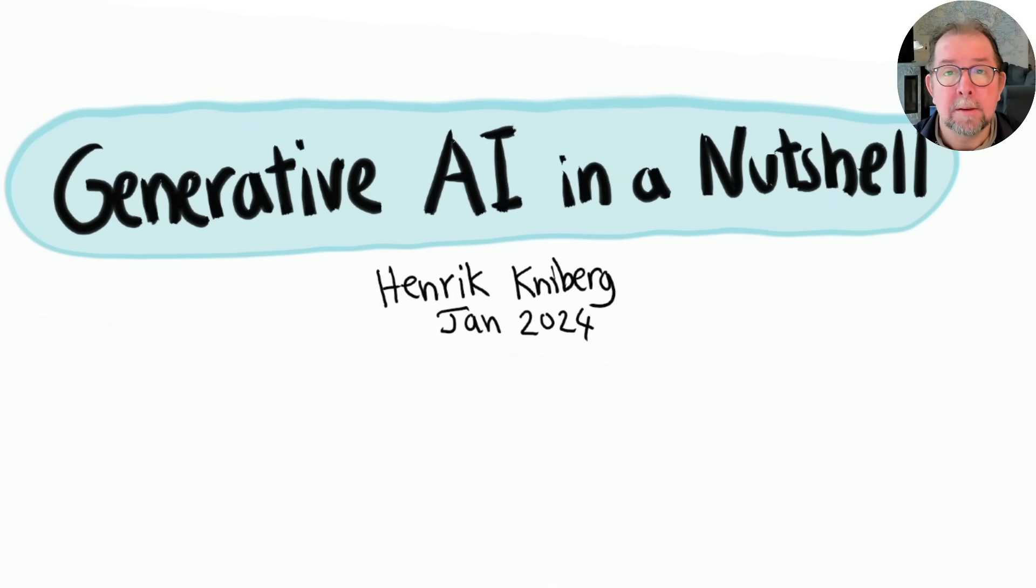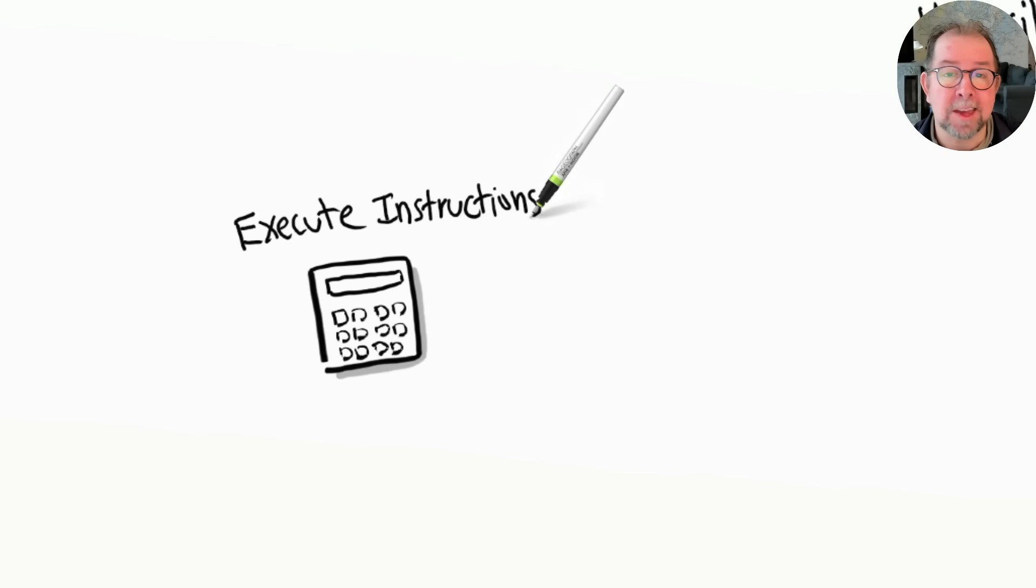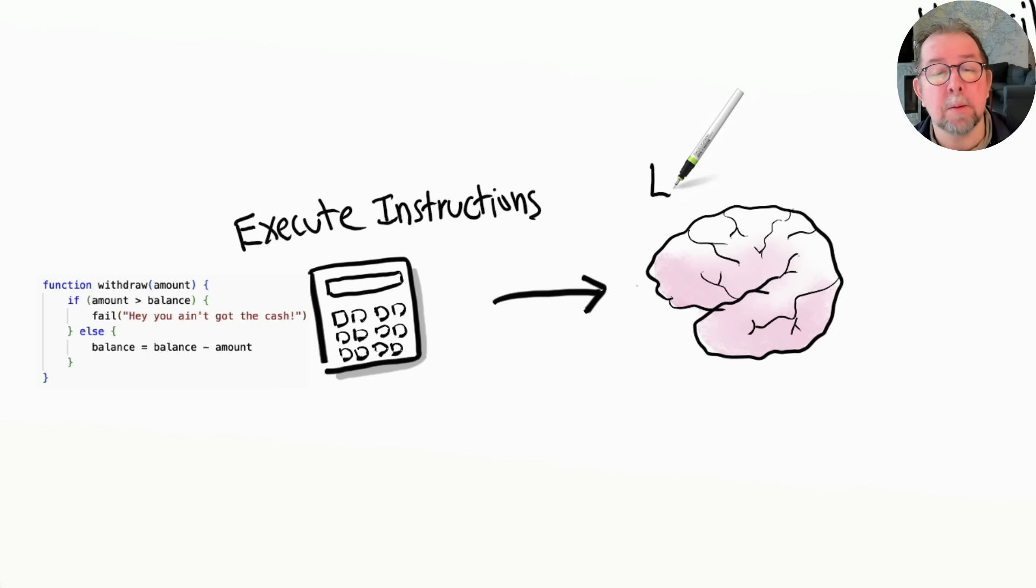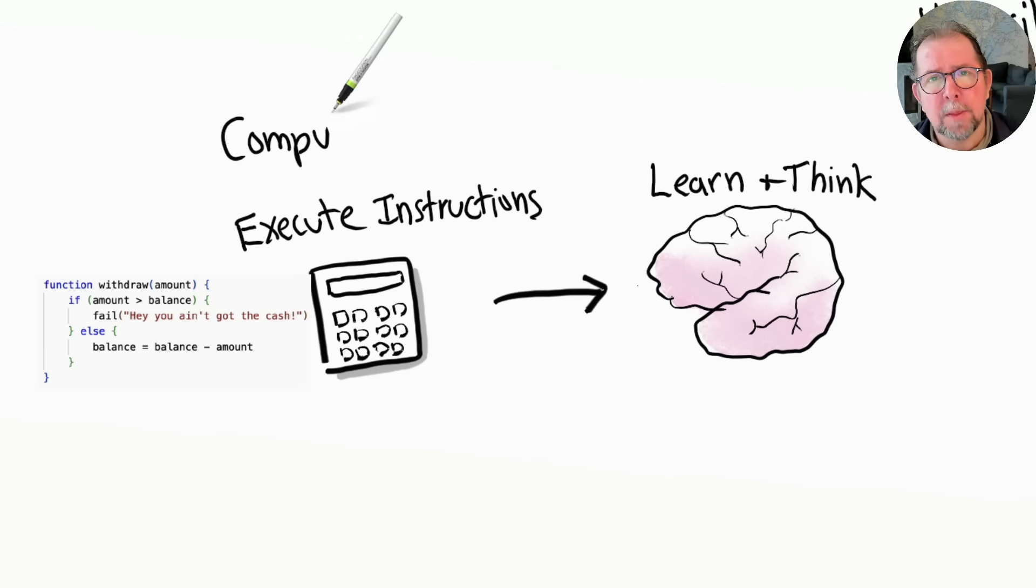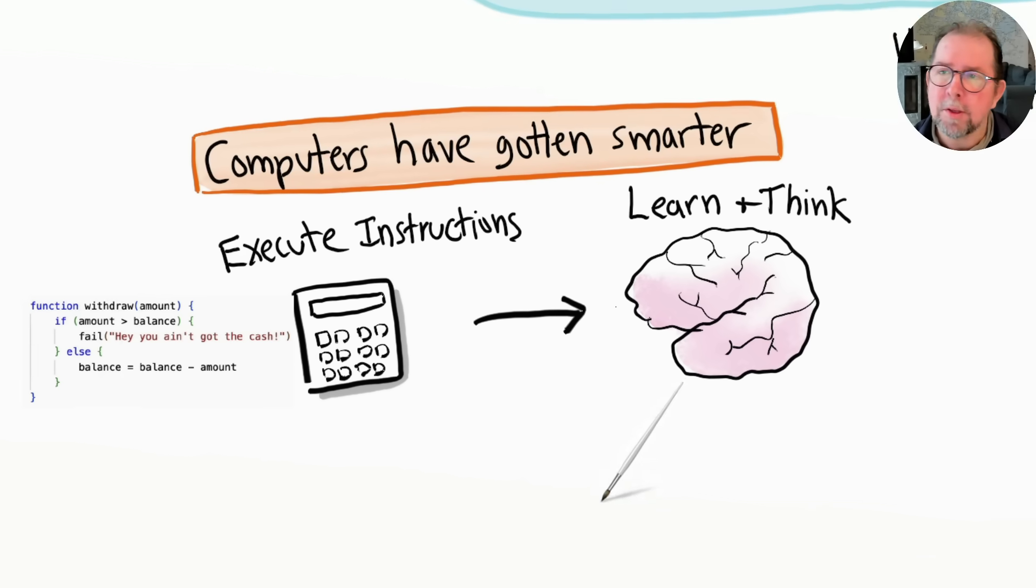Ever since computers were invented, they've really just been glorified calculators—machines that execute the exact instructions given to them by programmers. But something incredible is happening now: computers have started gaining the ability to learn and think and communicate just like we do. They can do creative intellectual work that previously only humans could do.